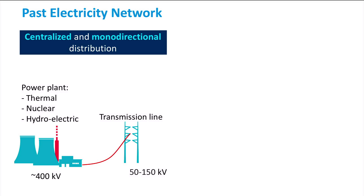The electricity is transmitted in tri-phase alternating current, as proposed by Nikola Tesla. The voltage is still very high, between 50 and 150 kV. This is important since the power dissipation depends on the current flow squared. Therefore, at high voltage and low current, the power dissipation by the cables is minimal.